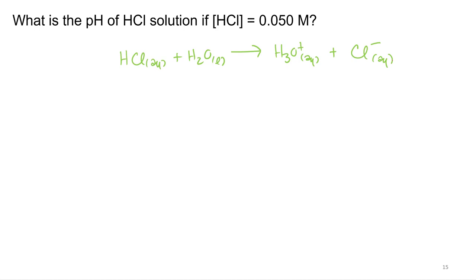So since it's a strong acid, and that is a key—HCl is a strong acid—because it's a strong acid and it's 100% ionization, for every one mole of HCl we have, we're gonna make one mole of hydronium. So really, the concentrations are equal.